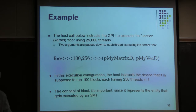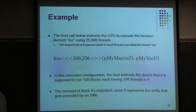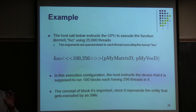The idea is that you have these stream multiprocessors, these SMs. For instance, on this laptop I have four SMs. So if I launch this kernel with four SMs, chances are that every SM will end up doing about 25 blocks. Some blocks may end up doing more work, and it doesn't have to be partitioned exactly 25 per each of the four SMs. But on average, each of those four SMs will end up executing about 24-25 blocks.